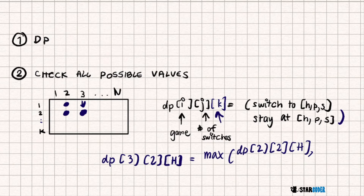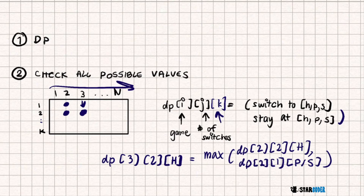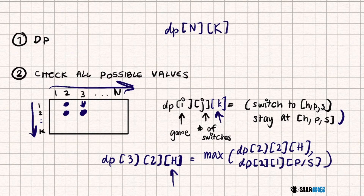The other main option is swapping. If I swapped, it would be DP[2][1], and then either Paper or Scissors, because those are the other moves I could have come from. This way we loop through every game, loop through all of the swaps, and then loop through H, P, and S to find the maximum value of each one. At the very end, we look at DP[N][K] and find the maximum of H, P, or S.